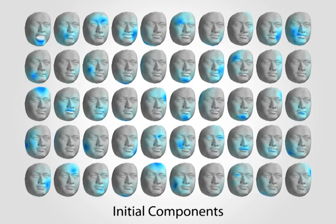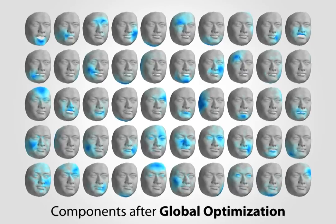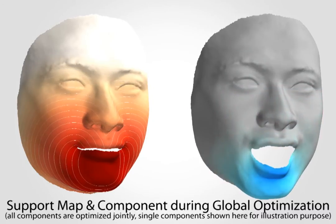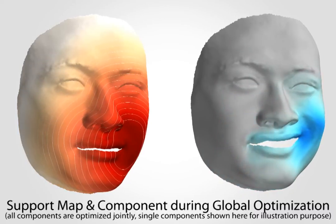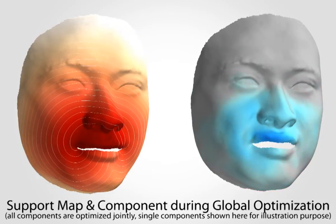These components are not optimal. We propose a global optimization approach that jointly maximizes sparsity, locality, and reconstruction accuracy. While our method refines all the components globally at each iteration, we show this procedure on a few components for illustration purposes.